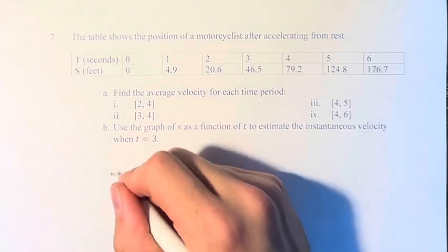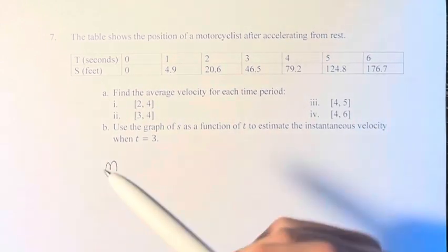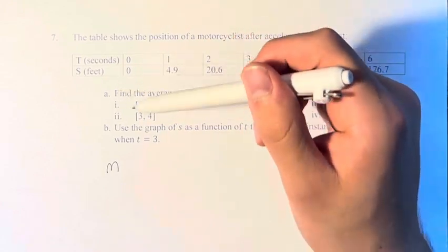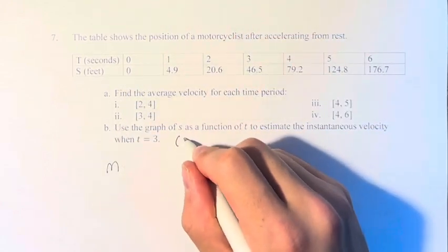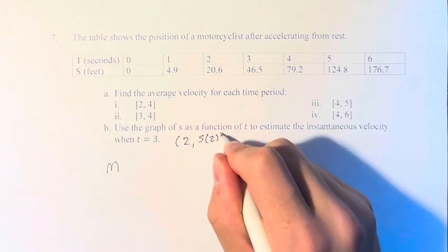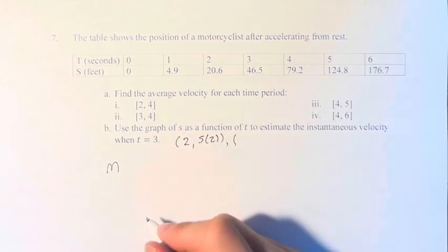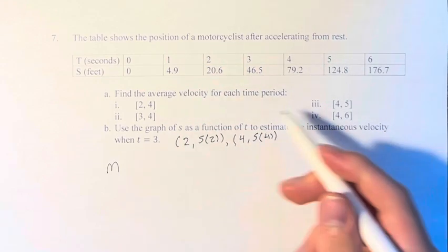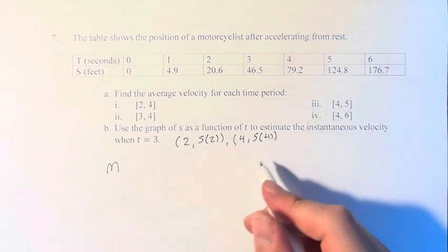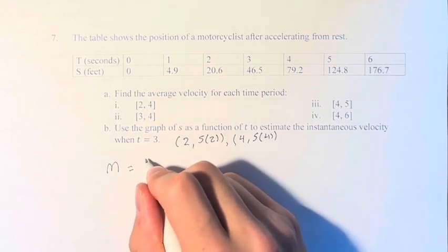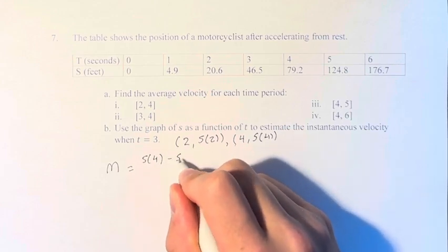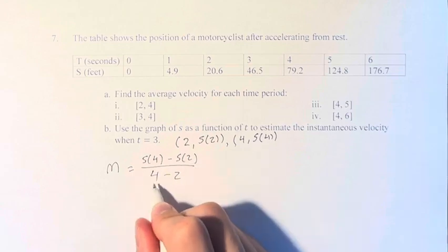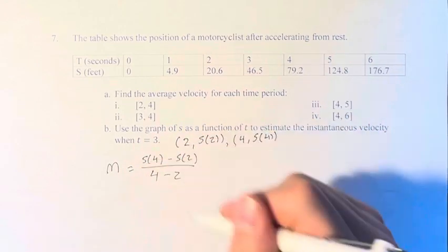What this is going to be is the slope between these two points, where the point is 2 and s of 2 (the position at 2), and 4, the position at 4. This is just an example. We're going to do this four times. But you take the position at 4 minus the position at 2 over 4 minus 2. This is the change in y over the change in x, and this is your slope.